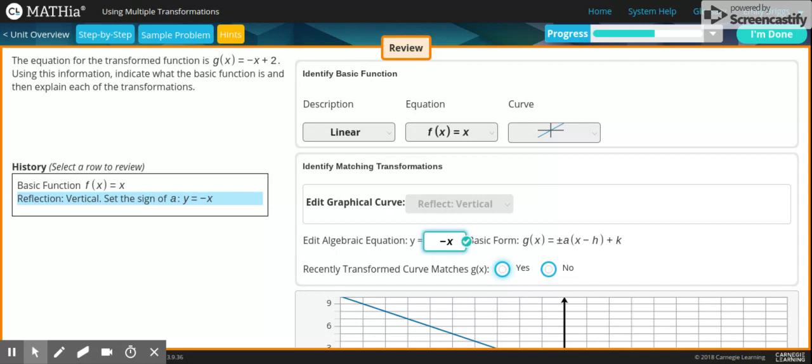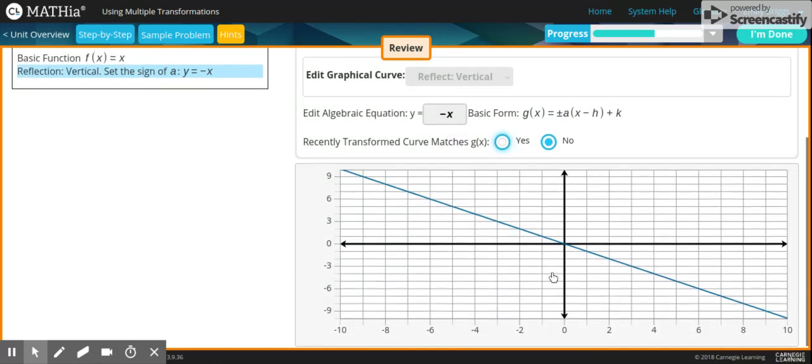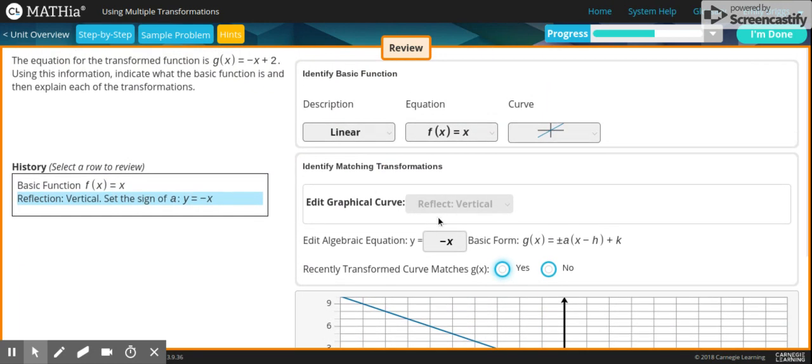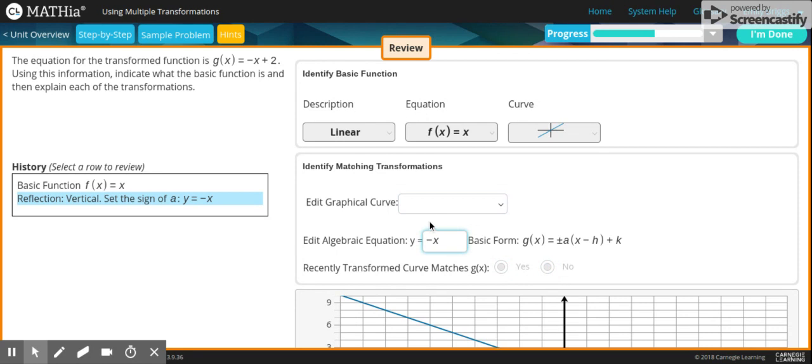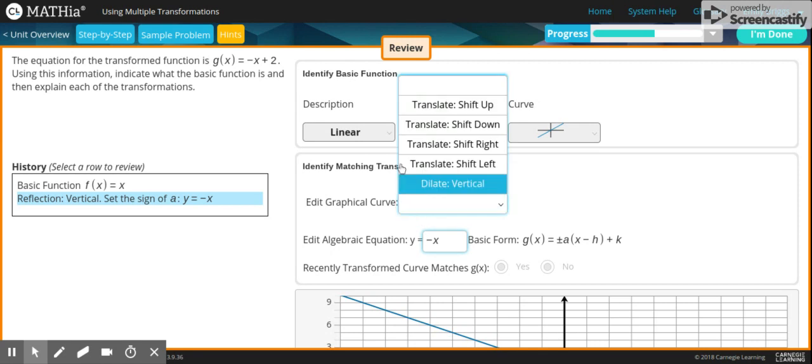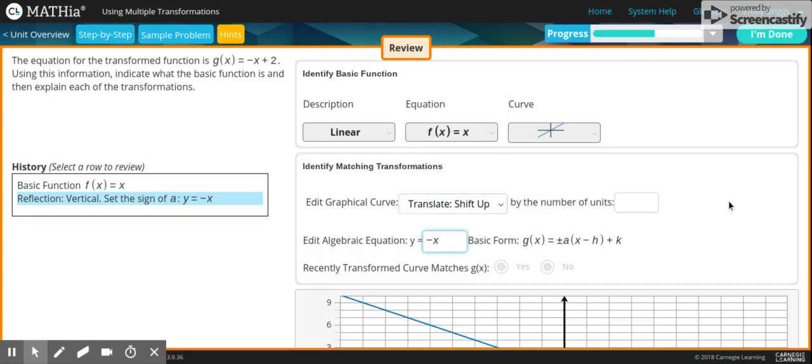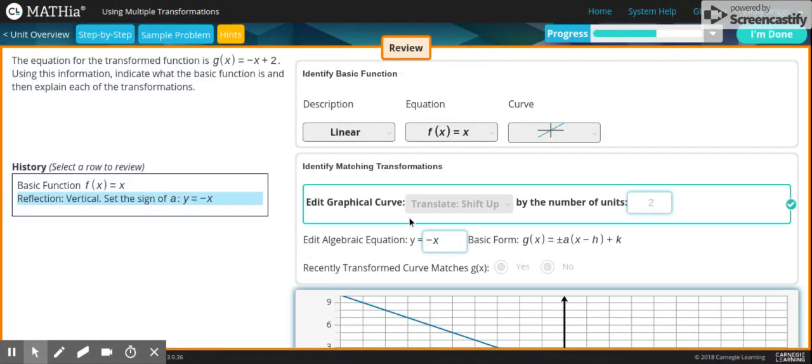And then it changes to -x. Because we still have to add 2 to this, it's not done. And because the +2 is not in parentheses, it means that you're shifting up or down. Because it's +2, we know that it's shifting up by a factor of 2 units. And then you just add 2.